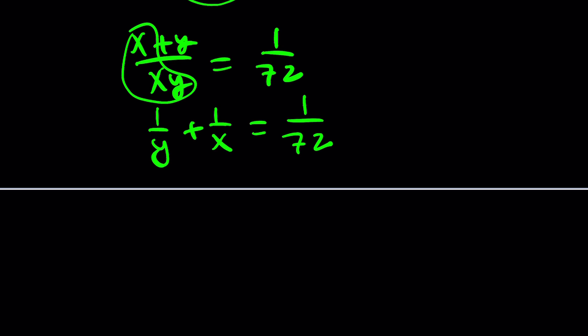Awesome. So we're adding two unit fractions and we're getting a unit fraction. Are these called unit fractions or Egyptian fractions? Something like that. Here's the idea. We want to add two fractions whose numerators are 1, like 1 over something plus 1 over something, and we want to get 1 over 72.